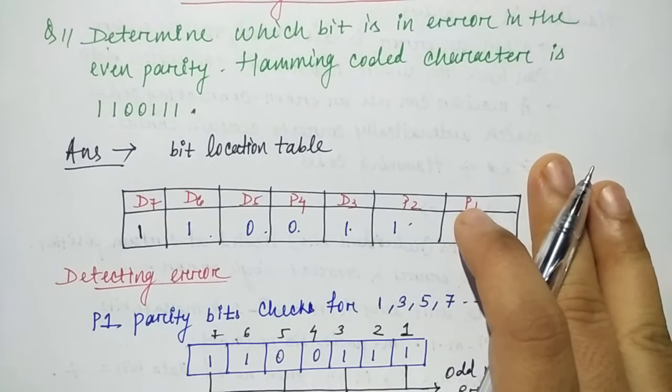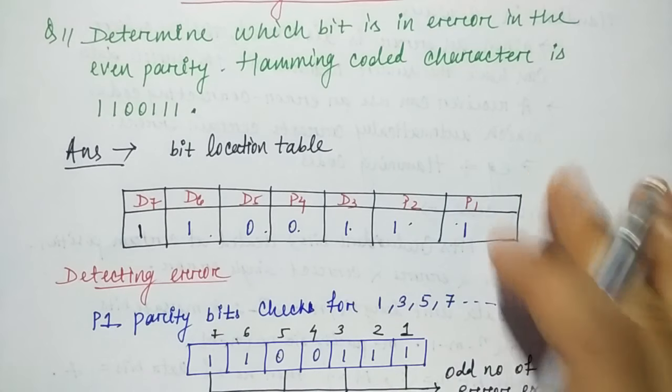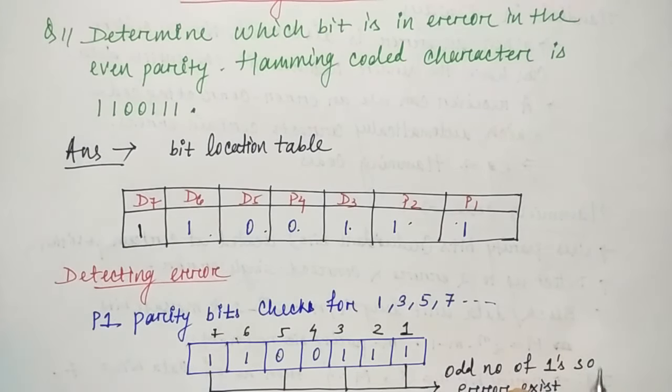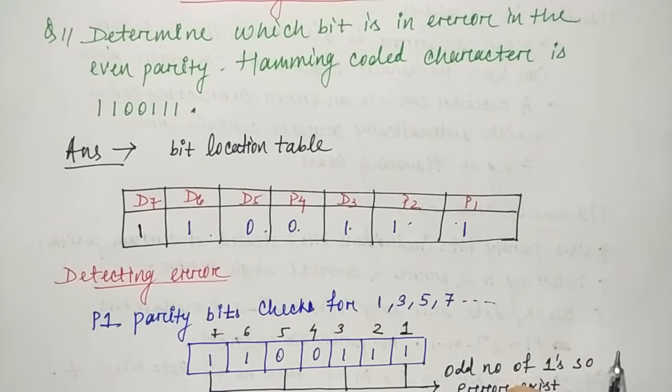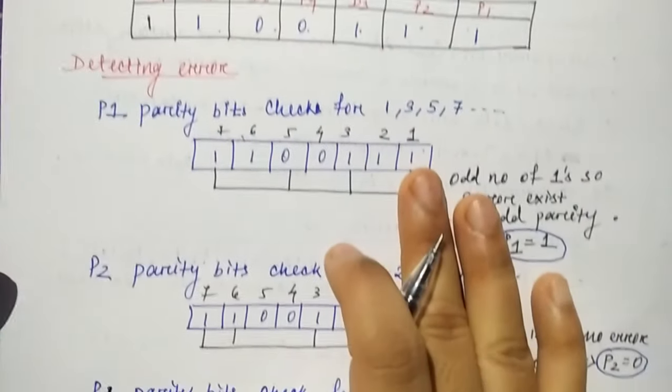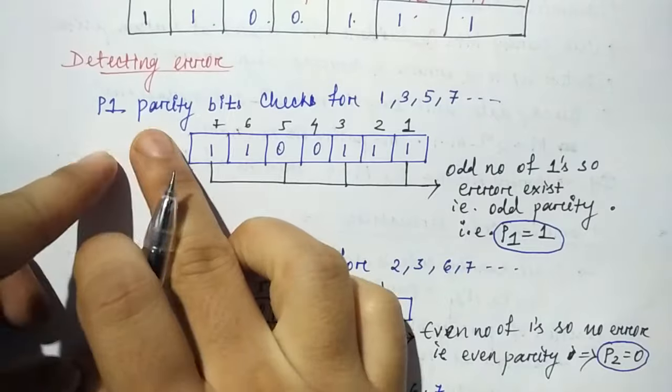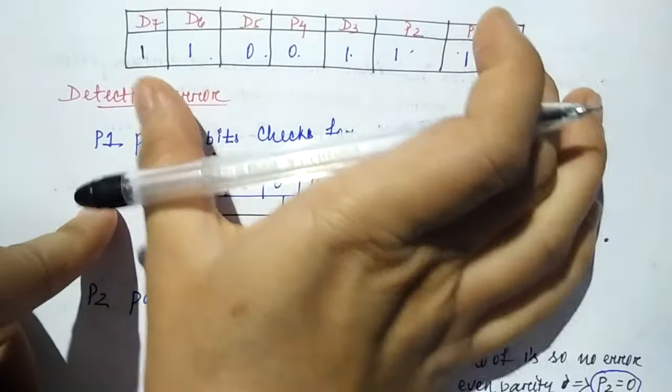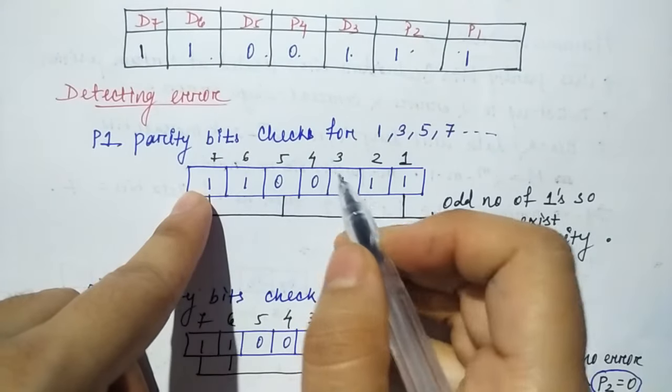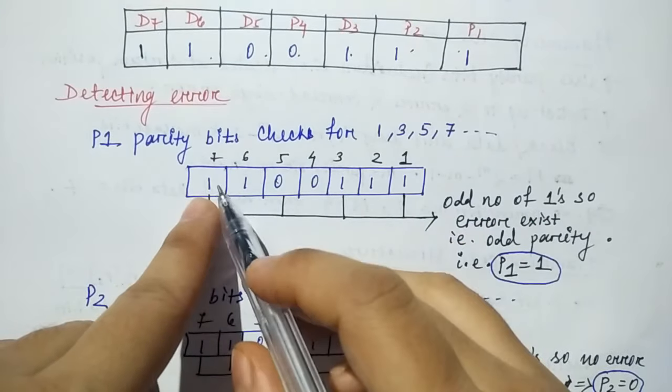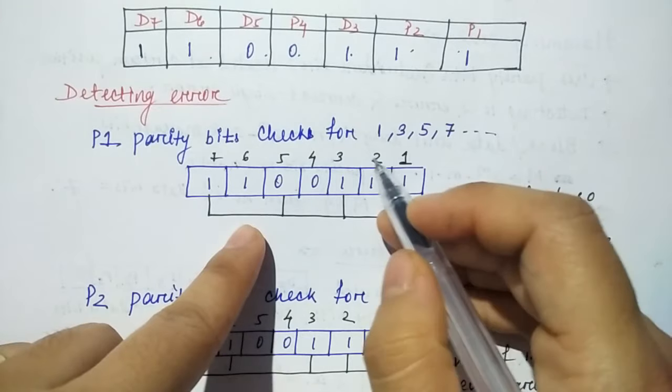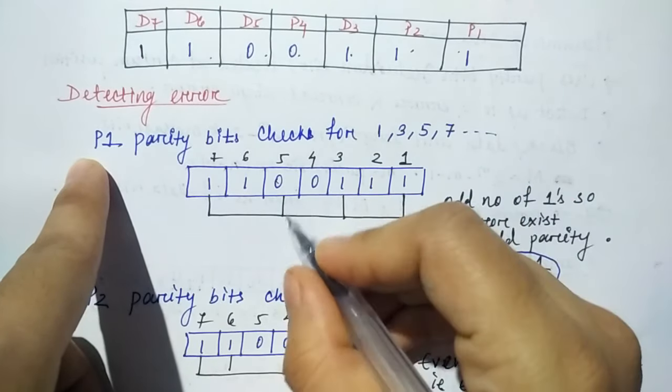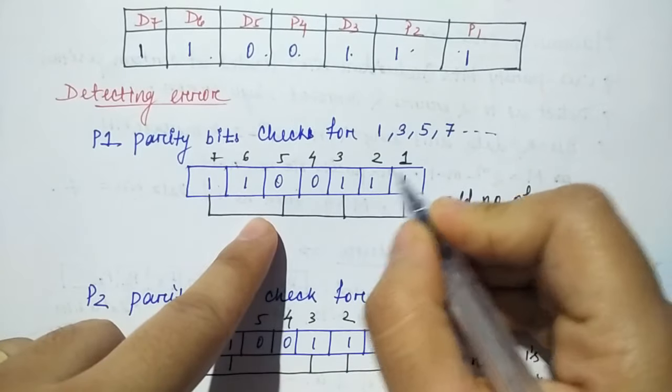After that, we will detect error in the second step for the parity bits P1, P2, and P4. First, we will detect P1. P1 parity bit checks for positions 1, 3, 5, and 7. You can write this structure - the Hamming code character from the question with the positions.